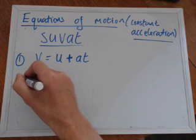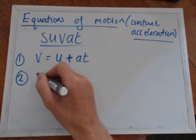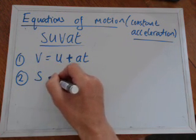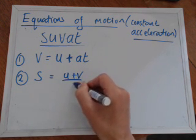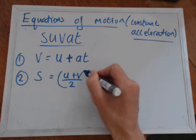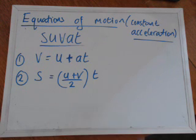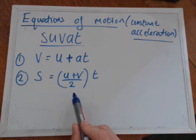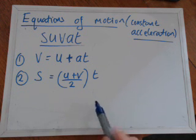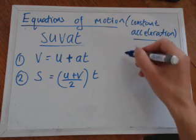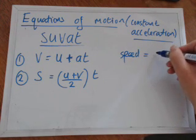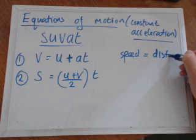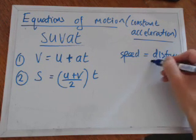The second equation is S equals U plus V over two, times time. So effectively that could be displacement or distance is equal to average velocity times time.